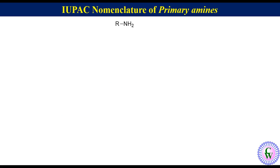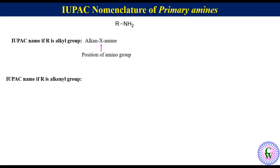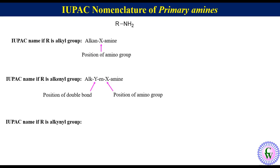A primary amine can be represented as R-NH₂. If R is an alkyl group, the IUPAC name is alkane-X-amine, where X is the position of the amine group. If R contains a double bond, the name is alk-Y-ene-X-amine, where Y is the position of the double bond and X is the position of the amine group. If R contains a triple bond, the name is alk-Y-ine-X-amine.